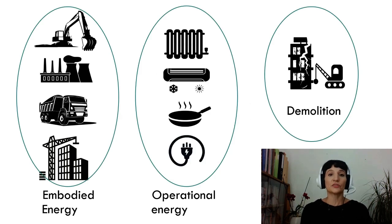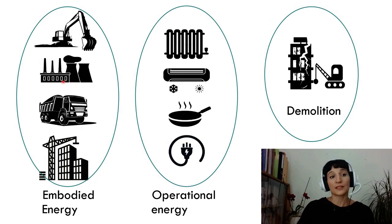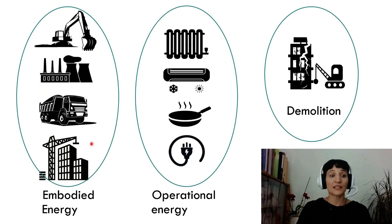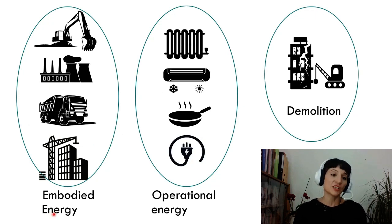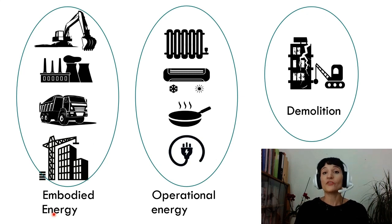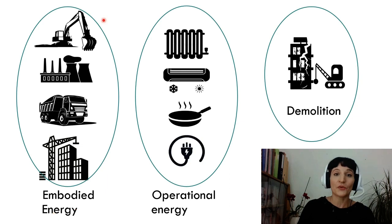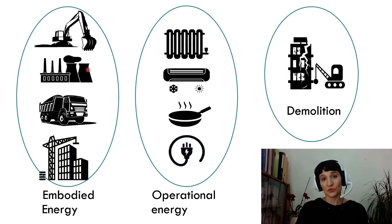Energy is used in the construction — when materials are being extracted, when materials are being manufactured, when they're transported and on the construction site. All of this together is using energy and this energy is called embodied energy. We talk about embodied energy and embodied CO2, which is the CO2 emissions arising from the energy use of the building's materials and its construction.